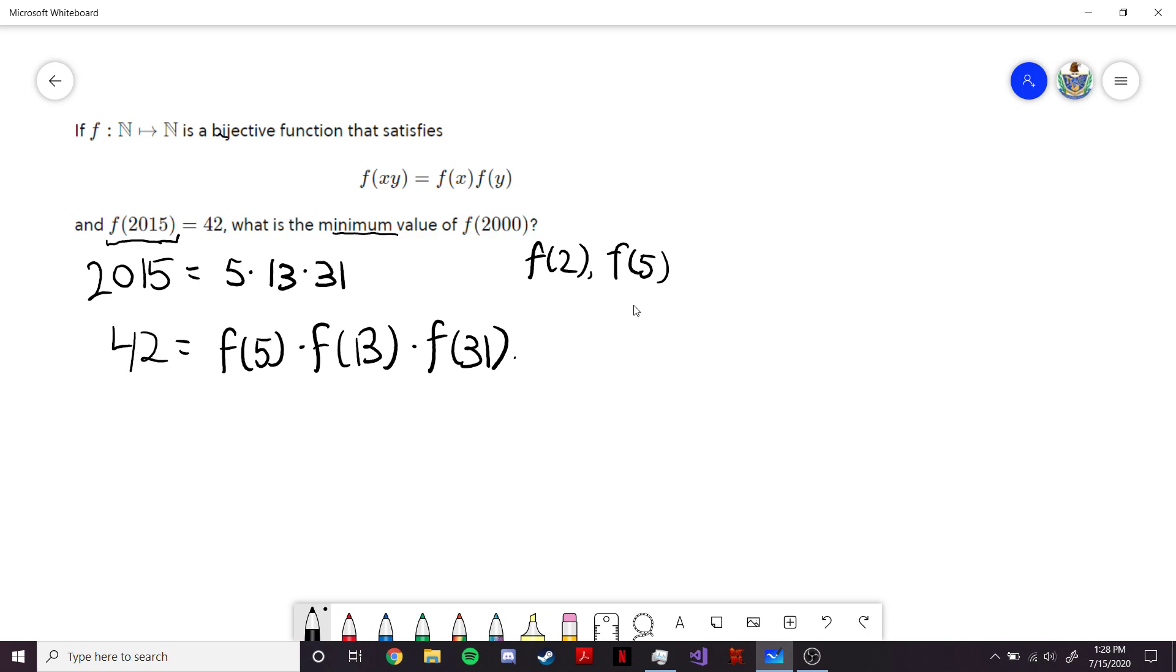And here, we're given f(5) in relation to 42. In particular, f(5) must divide into 42. So we want f(5) to be as small as possible. Well, the smallest natural number that would divide into 42 would be 1. However, we can see that f(5) can't be 1 by finding another thing that maps to 1.